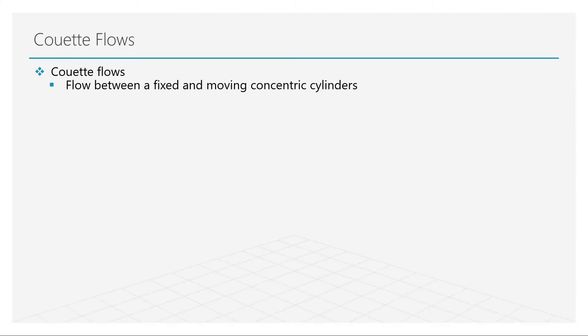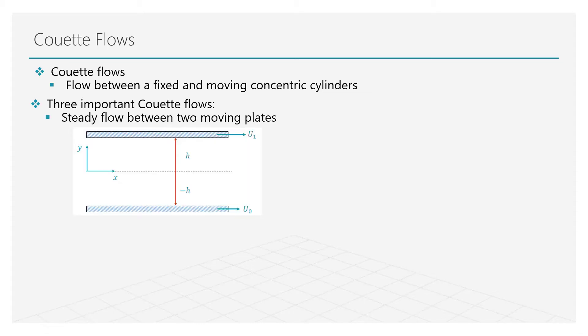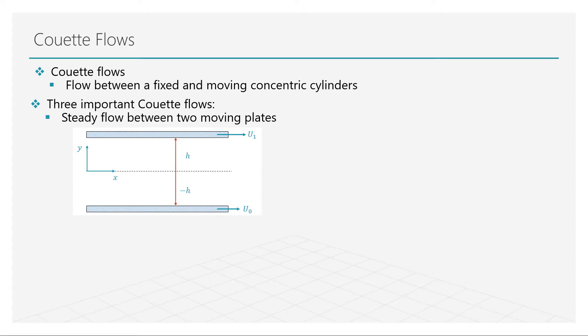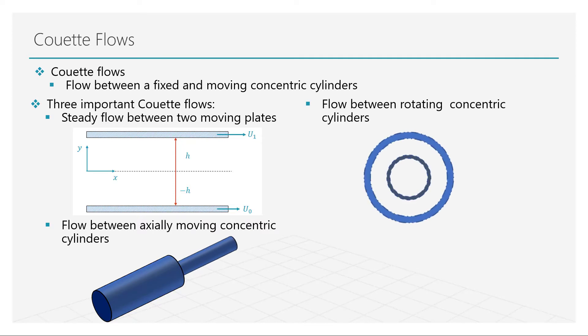The first set of flow problems we will consider fall under the category of Couette flows. These flows are named after Couette, who was the first engineer to study the flow between fixed and moving concentric cylinders. There are multiple ways of formulating the Couette flows, but in this lesson we will look at three important examples: flow between two parallel moving plates, flow between axially moving concentric cylinders, and finally flow between rotating concentric cylinders.